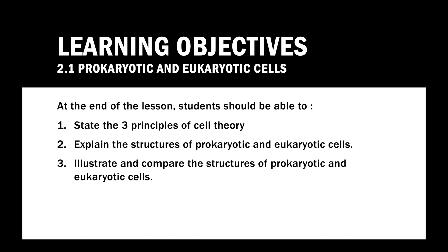These are the learning objectives for subtopic 2.1 which is prokaryotic and eukaryotic cells. At the end of the lesson, students should be able to state the three principles of Cell Theory, explain the structures of prokaryotic and eukaryotic cells, and illustrate and compare the structures of prokaryotic and eukaryotic cells.